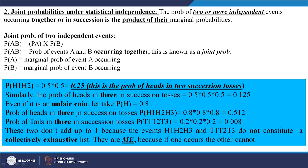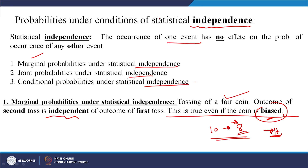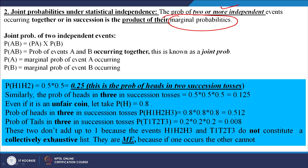Let us look at joint probabilities. Joint probability means two or more independent events can occur simultaneously, and it is the product of their marginal probabilities. Marginal probability is the probability of A or probability of B individually. For two independent events, P(AB) equals P(A) times P(B). P(AB) is joint probability, while P(A) and P(B) are marginal probabilities.